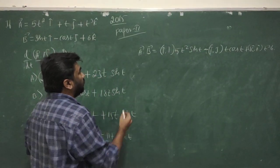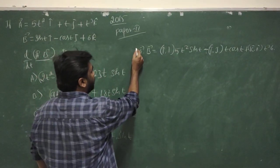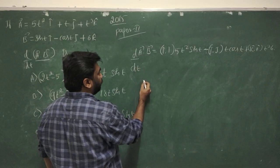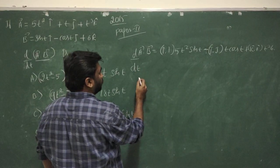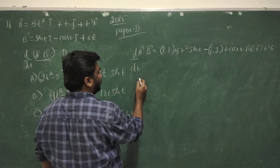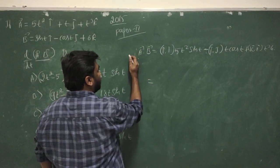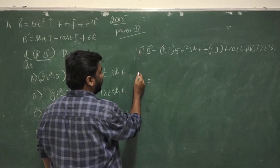Now we have to differentiate with respect to t. So differentiating a dot b with respect to t.